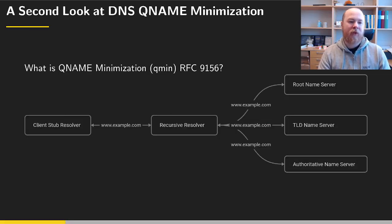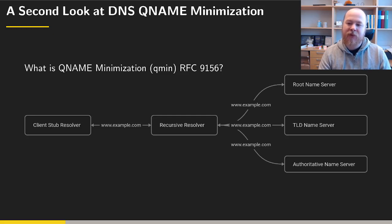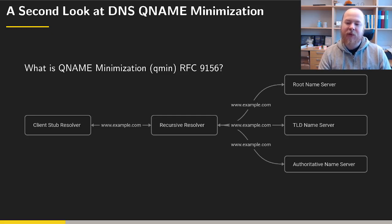What is QNAME minimization? A resolver is performing a query on behalf of its client and it is sending the full query name to the different name servers in DNS. So it will send www.example.com to the root name server, the TLD name server, and the authoritative name server for example.com. The idea of QNAME minimization, hereafter referred to as qmin, is to minimize the amount of data that is leaked to the DNS name servers.